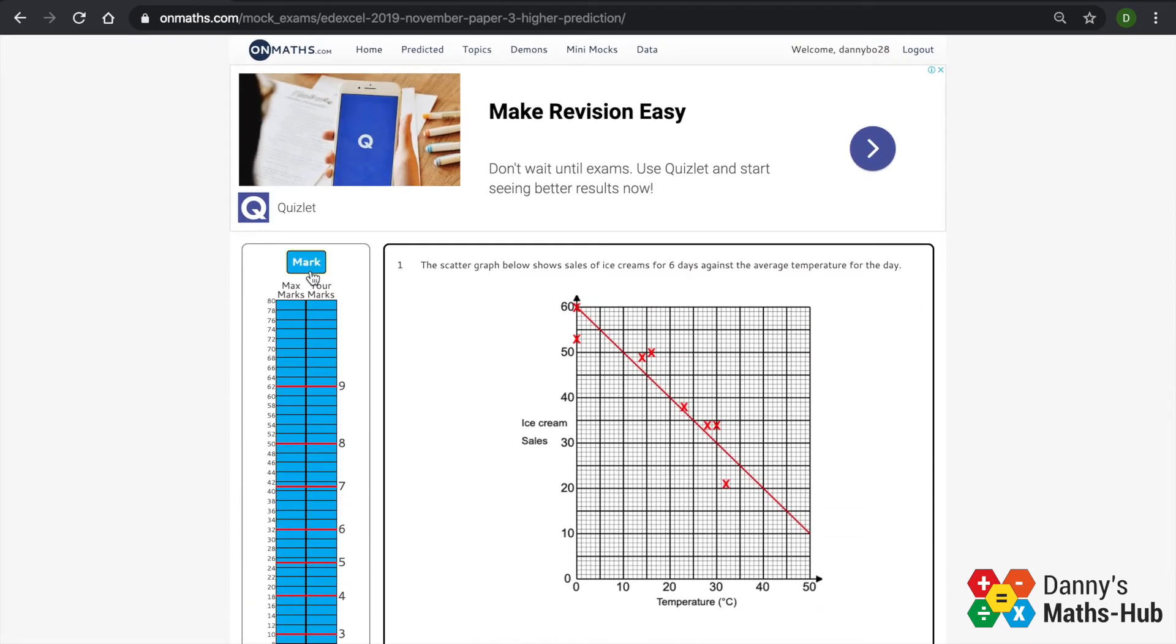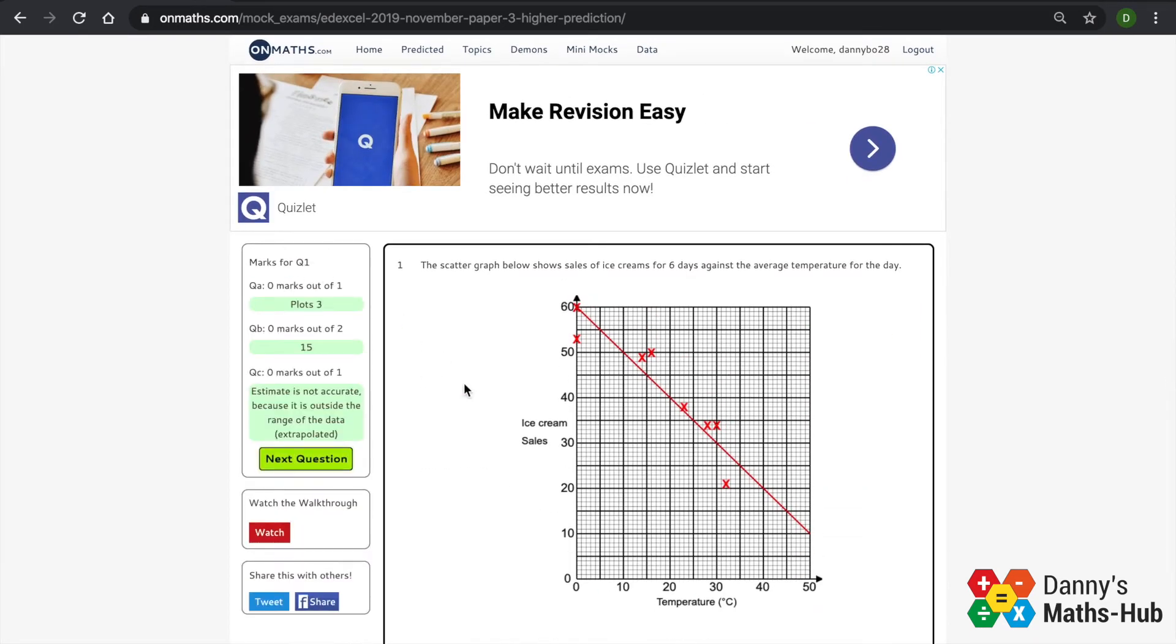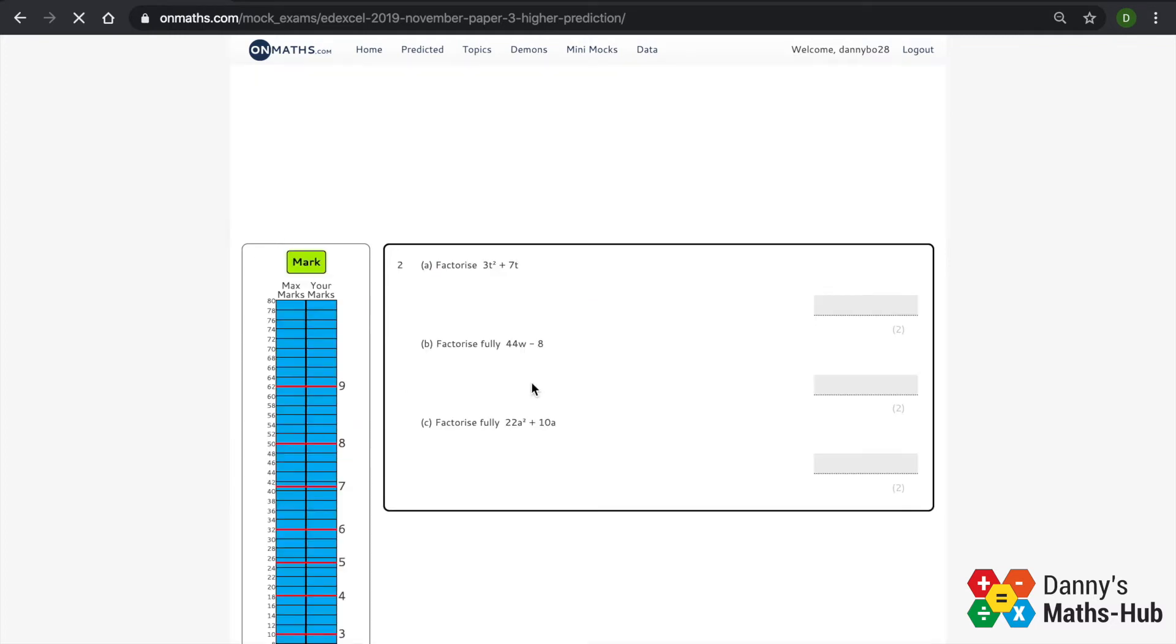Once you've put in all your answers, you can simply click mark, and it tells you how many you got correct for each question.